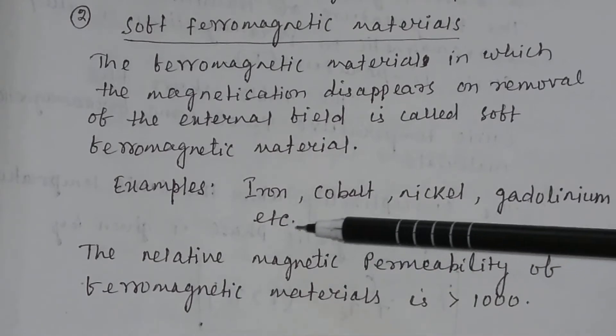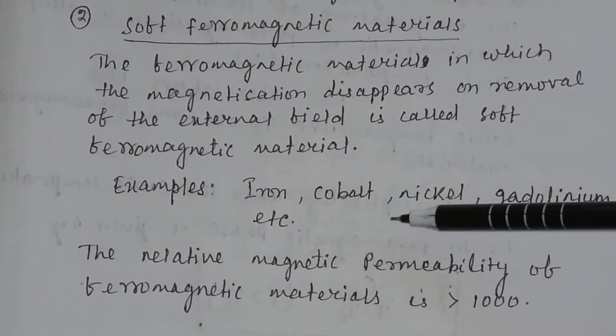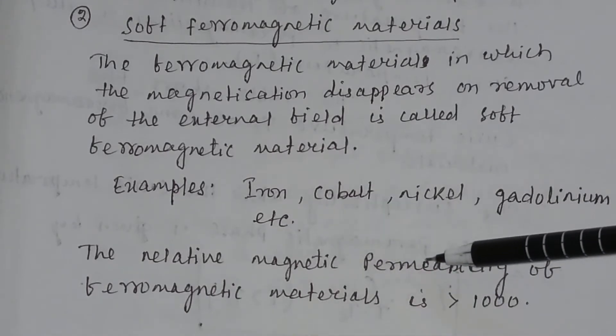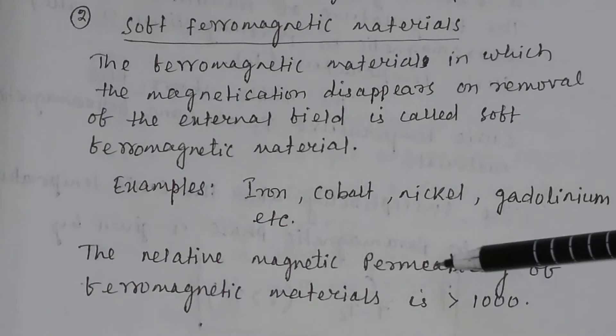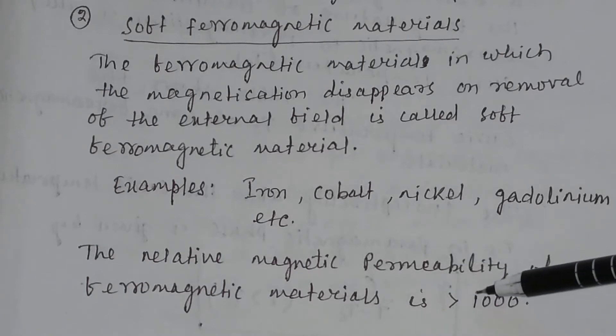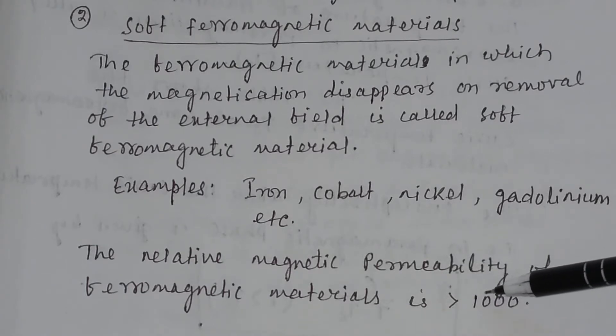Remember, the relative magnetic permeability of ferromagnetic material is very high, i.e., it is greater than 1000.